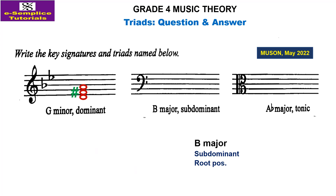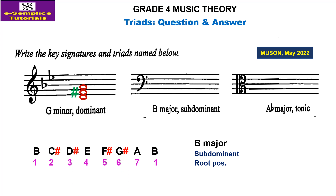Let's move to B major subdominant. The notes in B major have key signature accidentals which are F sharp, C sharp, G sharp, D sharp, and A sharp. We are looking for the subdominant, meaning the fourth degree E will be at the root. So E first, followed by the submediant, then the tonic. Stacking gives us E, G sharp, and B.